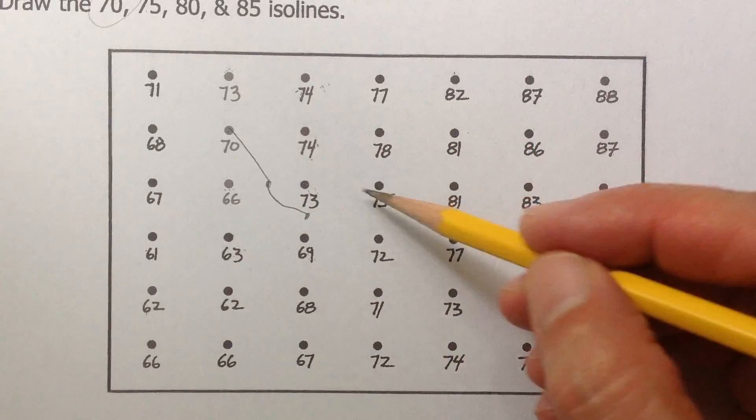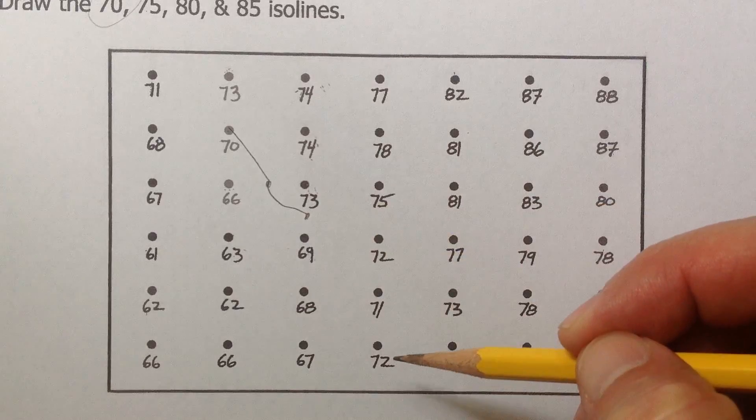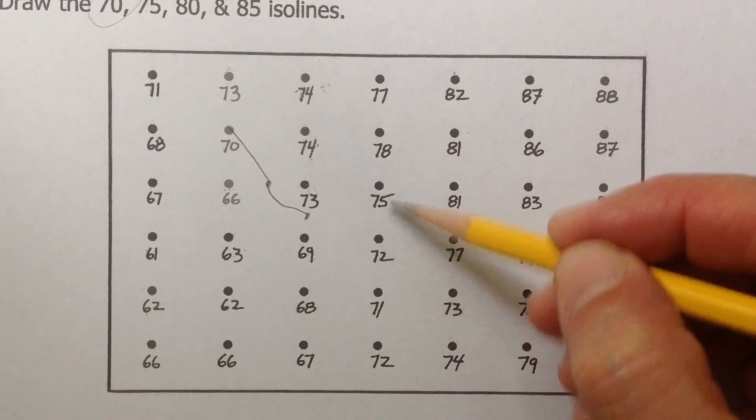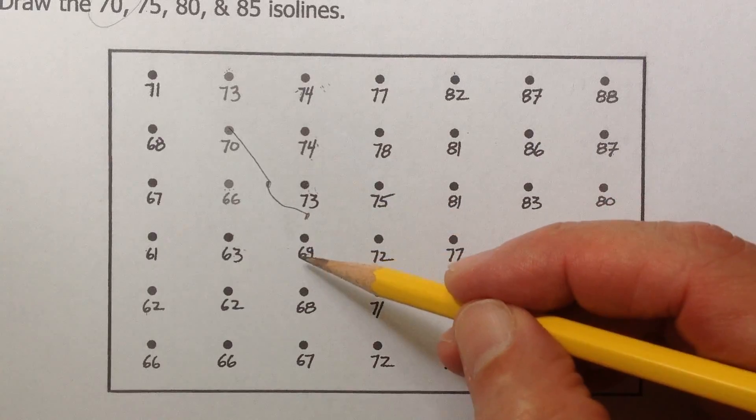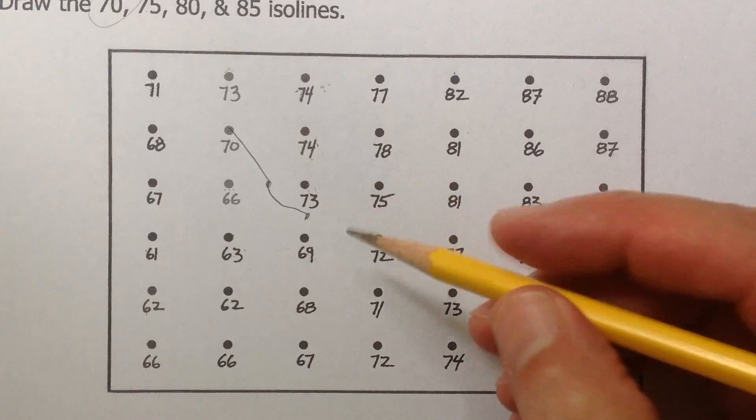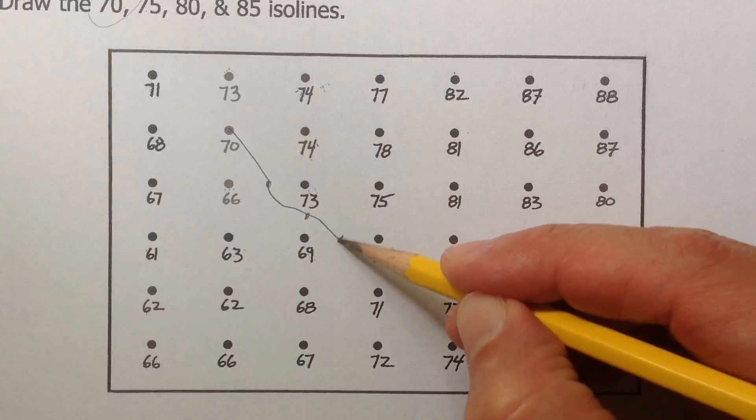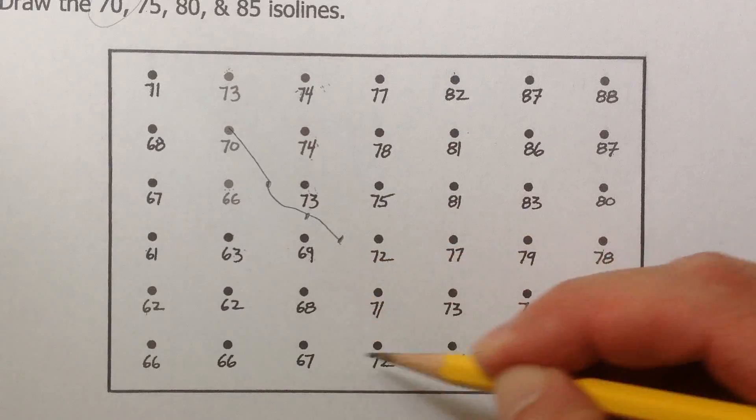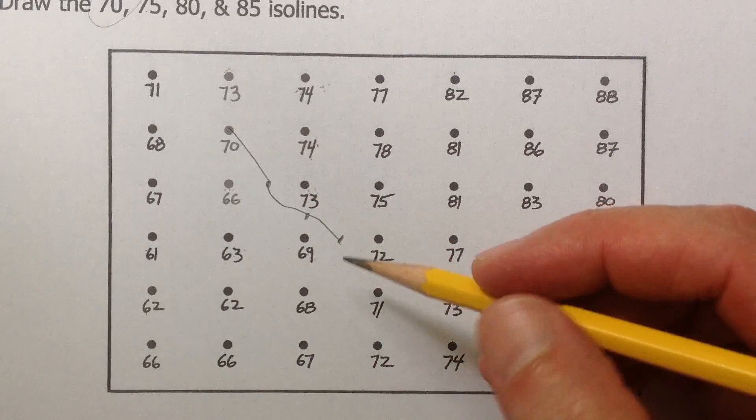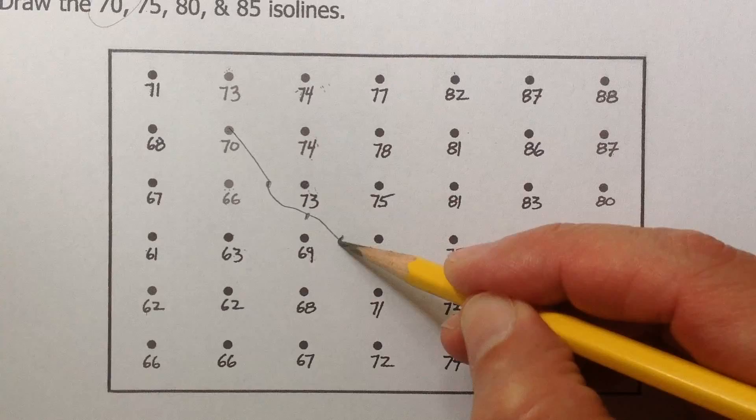So now we're here. Where's the next 70? Is it between 73 and 75? Nope, those are too high. These two numbers here, too high. Is 70 between 69 and 72? It is. So now you go here. So I call this like a stepping stone method. You put the little dots, and then you kind of just jump to the next one. So you're only just looking in a small area, and it really helps people draw these.